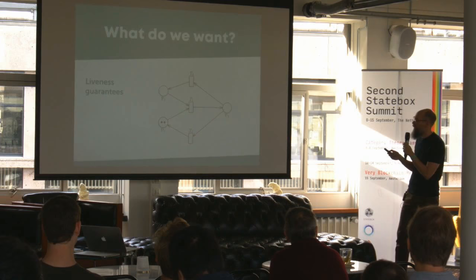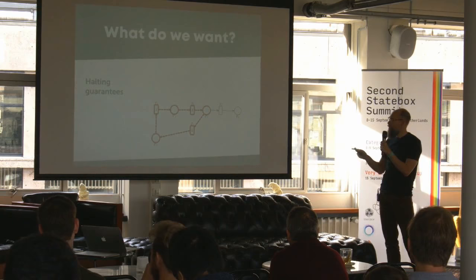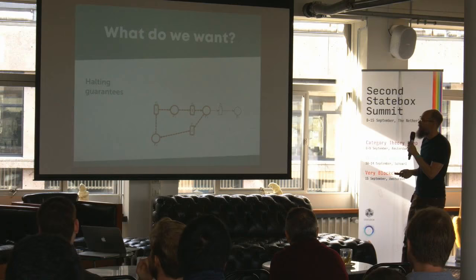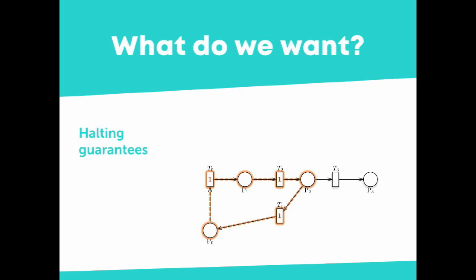Another thing we want is a halting guarantee. This is a similar problem where you can get stuck in a loop going around forever and never reaching your goal. That's a big problem because in code like JavaScript there's a known result that you can't prove your program doesn't have infinite loops in a general sense. But with Petri Nets we do have a chance of doing that — so that's another great thing about Petri Nets.